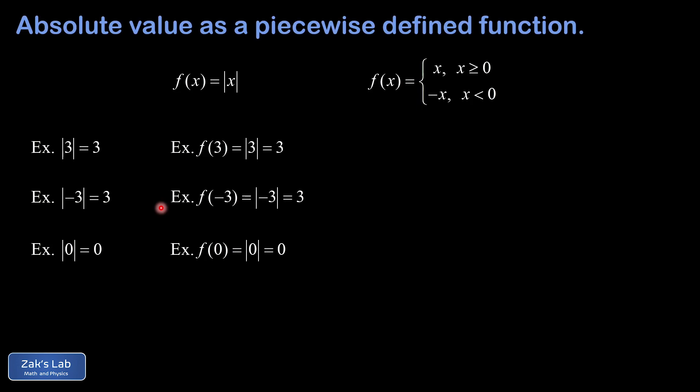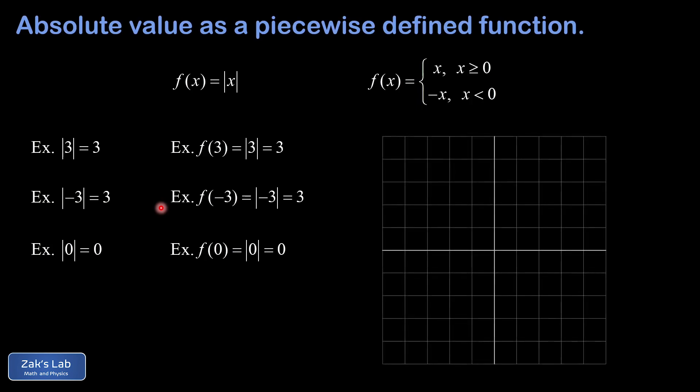So now we have the absolute value function defined as a piecewise defined function valid for all real numbers. And this means we can make a graph of this function. So first we restrict ourselves to the non-negative case. So when X is zero or to the right of zero, and in that case, f of X is equal to X. Well, that's just the line Y equals X that has a slope of one and passes through the origin. So there's the right half of the absolute value function. And we can see on here, for example, that if we plug in X equals three, that's connected to a Y value of three. In other words, the absolute value of three is three.